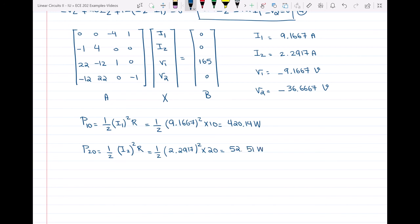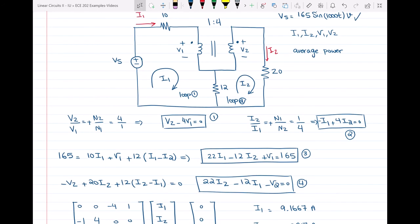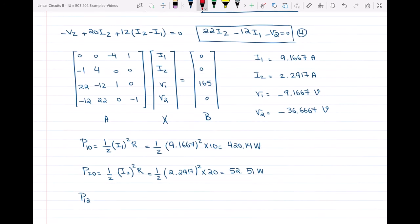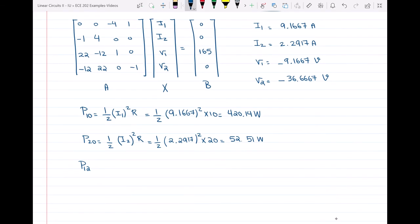The last one will be the power in the 12Ω resistor. Note that the current passing through this resistor is I1 minus I2. It doesn't matter if you write it as I2 minus I1 or I1 minus I2 because in calculating the power we're going to square it anyway. So the negative sign doesn't matter here. That would be half (I1 minus I2) squared multiplied by 12 and that would give us 283.59 watts.